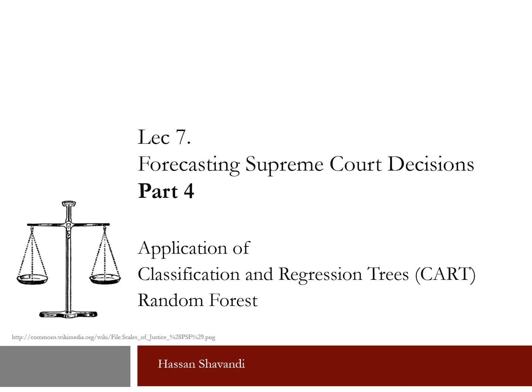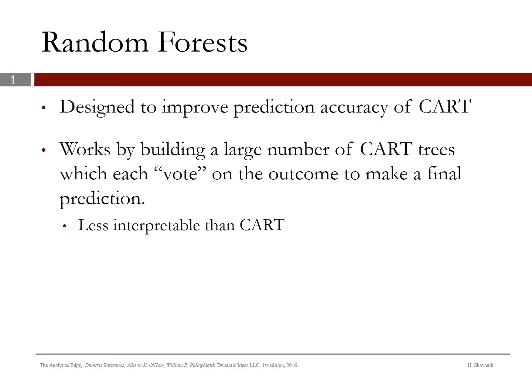Lecture seven: forecasting Supreme Court decisions, part four — the last part of this lecture. In this part we are going to cover the random forest method. The random forest method is actually a variation of the CART method. The CART model, in order to improve the prediction accuracy, random forest builds a large number of CART trees which each vote on the outcome.